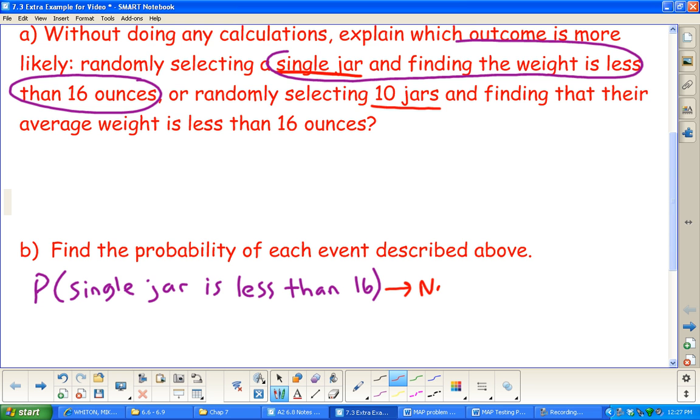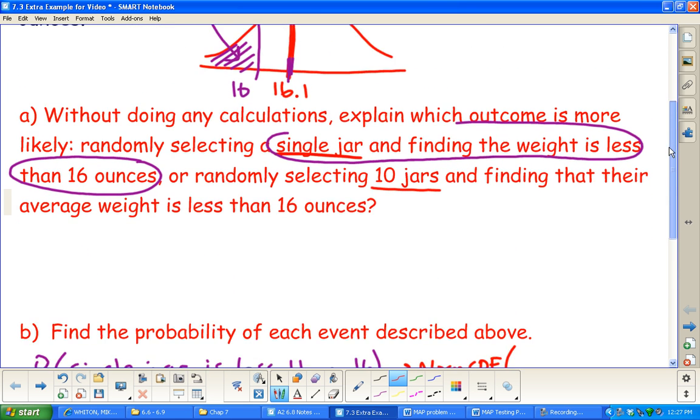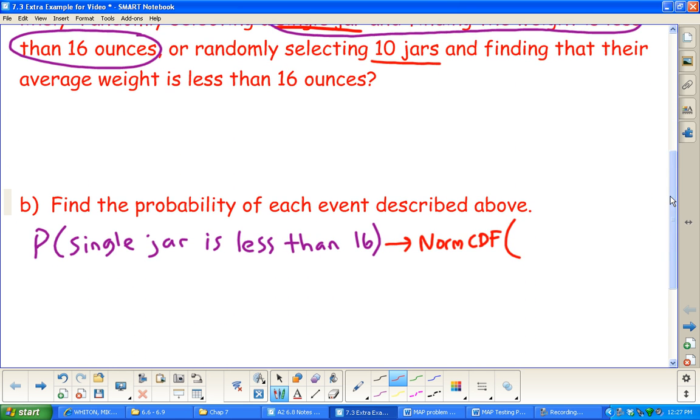We're going to go ahead and do a norm CDF, like the picture I drew before. Less than 16 ounces, so everything with a left bound of negative 9999 up through 16 ounces. They're telling you the mean is 16.1 ounces, the standard deviation was 0.15 ounces. That will give us the answer - just like a problem we did back in chapter two.